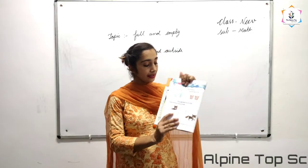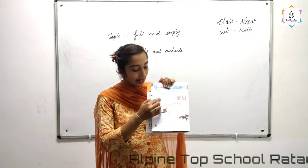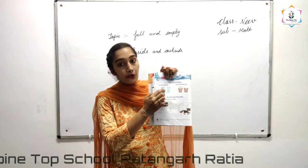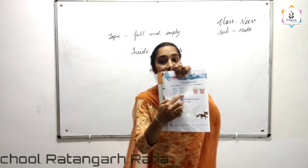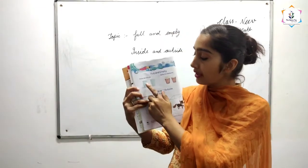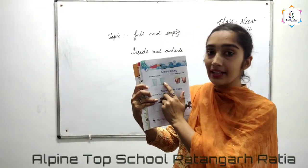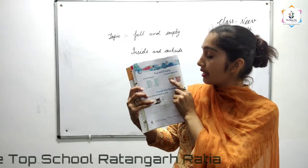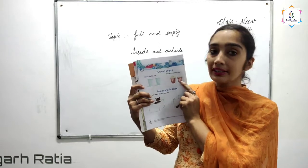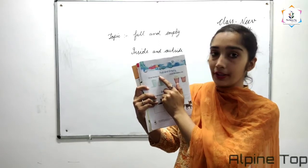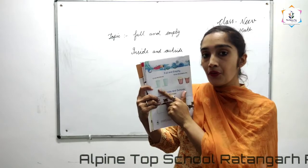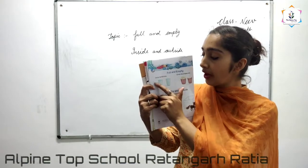See page number 10. Circle the full one. This glass is full of water and this glass is empty. This box is full of popcorn and this box is empty. Circle the full one — which one is full? This one is full of water.